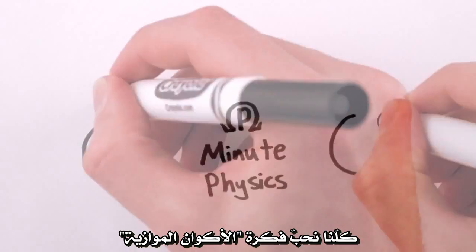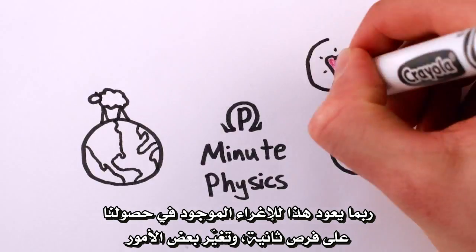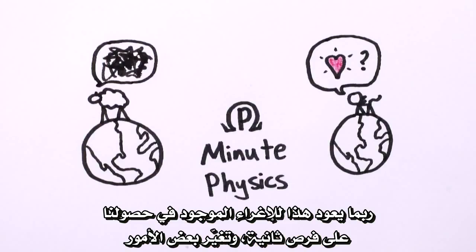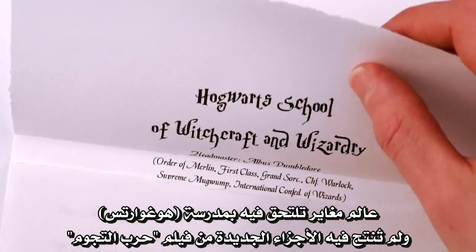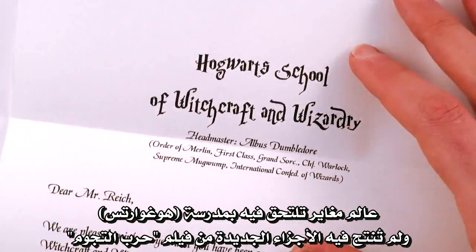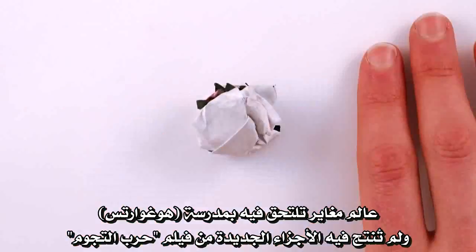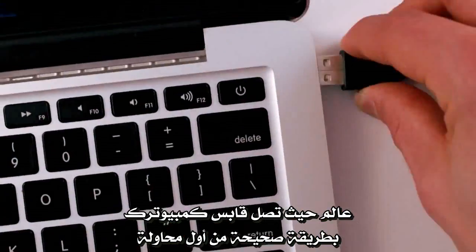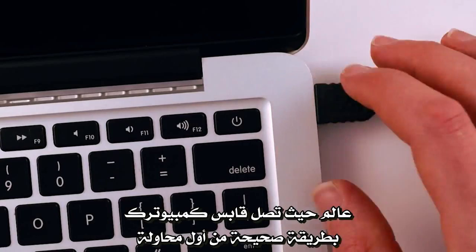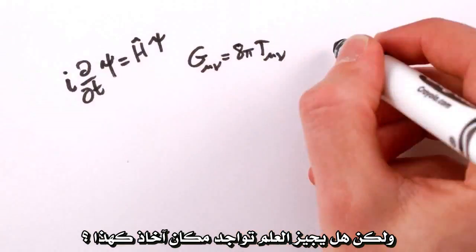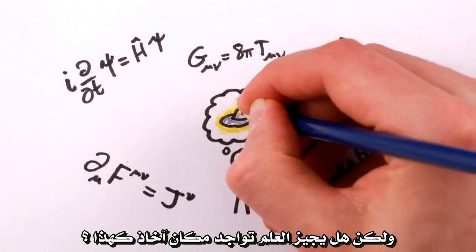Everyone loves the idea of parallel universes. Maybe it's the appeal of an ideal world where you have second chances and things turn out differently. An alternate reality where you do get into Hogwarts, and the Star Wars prequels aren't made, and you finally plug in your asymmetric computer cord correctly on the first try. But is there really a place in science for such wistful speculation?